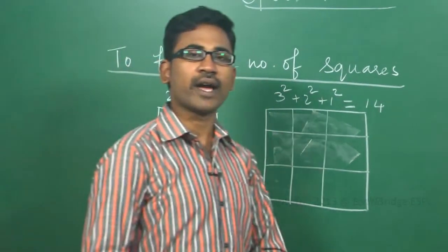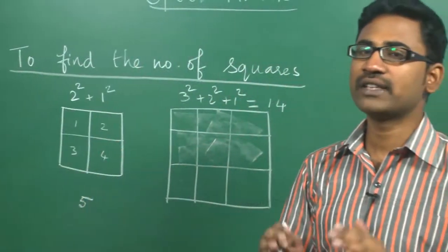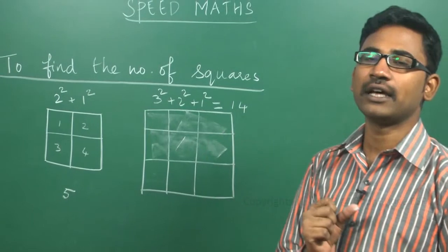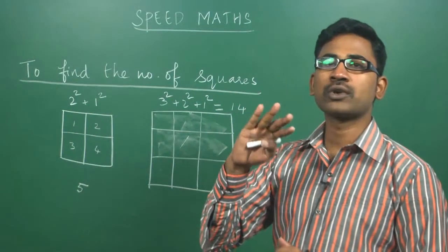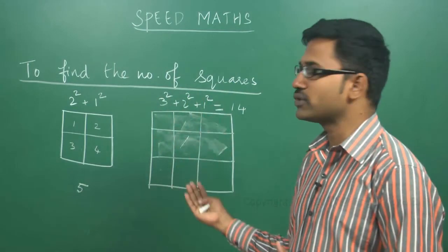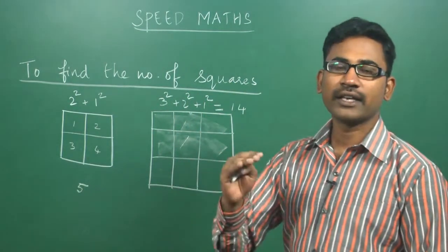This is a shortcut to find if a box is given with some number of squares. You have to count the number of squares in a row. Then, if number of squares are 4, 4 square plus 3 square plus 2 square plus 1 square. That will give you the number of squares in the given diagram.